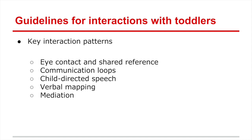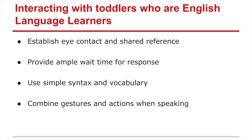In terms of interactions with toddlers, many of the same things we discussed with infants apply. We see interaction patterns like eye contact and shared reference points, which remain important. Communication loops — the question, answer, and response pattern from infancy — continue to develop. We start to build up child-directed speech where we're talking to and expecting responses back from the child, along with verbal mapping and mediation to make connections and content meaningful for students.